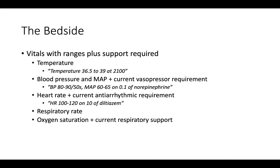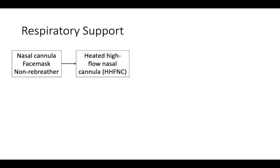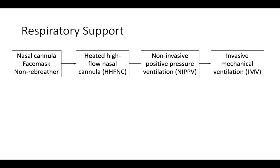What are the various types of respiratory support available in the ICU, and how do we report that information? The least intensive forms include nasal cannula, face mask, and non-rebreather. If the patient needs more support, the next step up includes heated high-flow nasal cannula and non-invasive positive pressure ventilation — CPAP and BiPAP. The most intensive respiratory support is provided via invasive mechanical ventilation. As respiratory support gets more complex, more values need to be reported. For nasal cannula, face mask, and non-rebreather, we only report the flow rate in liters per minute. For example: oxygen saturation 92 to 94% on 6 liters per minute nasal cannula.